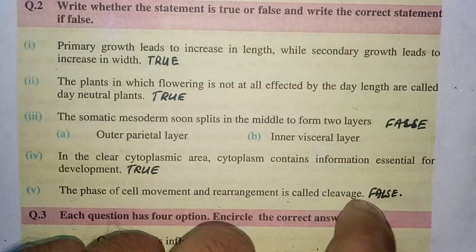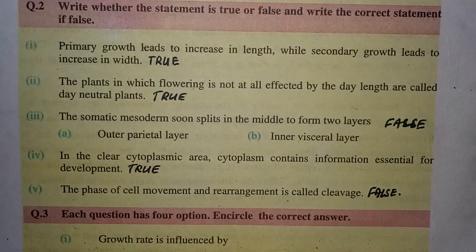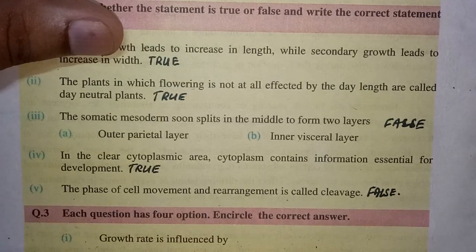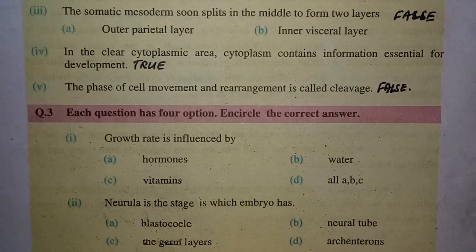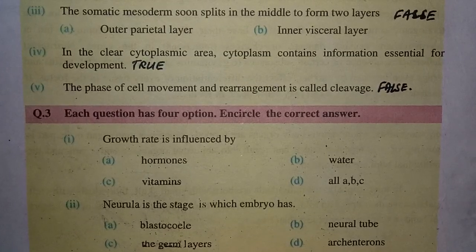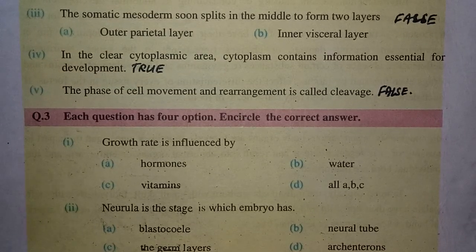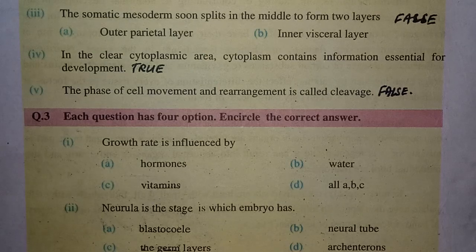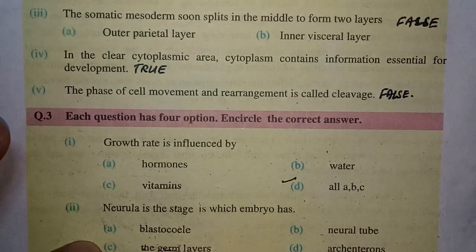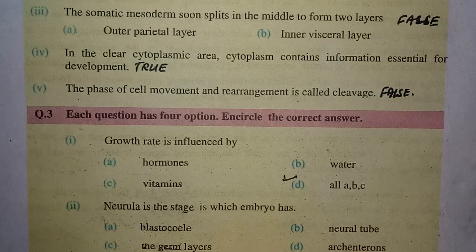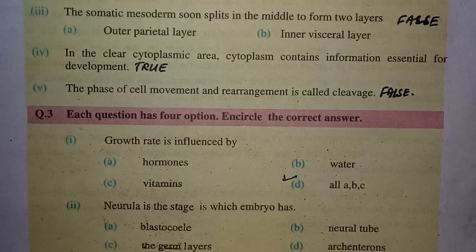Tell me the author of these two statements in the comments. Now let's move toward the third question, which is multiple choice questions. The first MCQ: growth rate is influenced by A) Hormones, B) Water, C) Vitamins. Option D — all of the above — is the right answer.